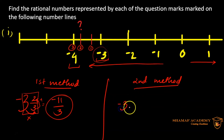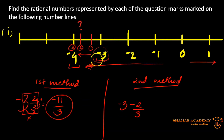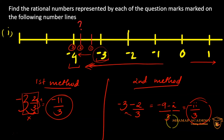For the second method, we write our main number, negative 3. Since the number line is going towards the left — the negative side — we subtract. The fraction is 2 out of 3 divisions, so we do negative 3 minus 2/3. Using cross multiplication for unlike fractions: minus 9 minus 2 over 3 gives negative 11/3. That's how we get the same answer. If you don't know how to subtract unlike fractions, let me know in the comments and I'll make a video on it.